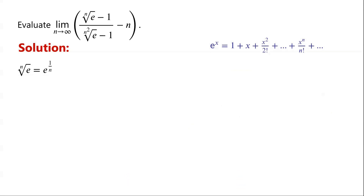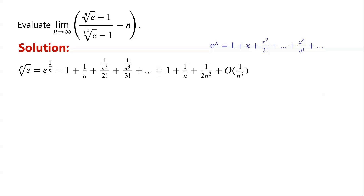The nth root of e can be written as e to the power of 1 over n. By applying the Taylor expansion, this equals 1 plus 1 over n, plus 1 over n squared over 2 factorial, plus 1 over n cubed over 3 factorial, plus so on. Which can be written as 1 plus 1 over n, plus 1 over 2n squared, plus big O of 1 over n cubed. Big O of 1 over n cubed represents all the remaining terms.